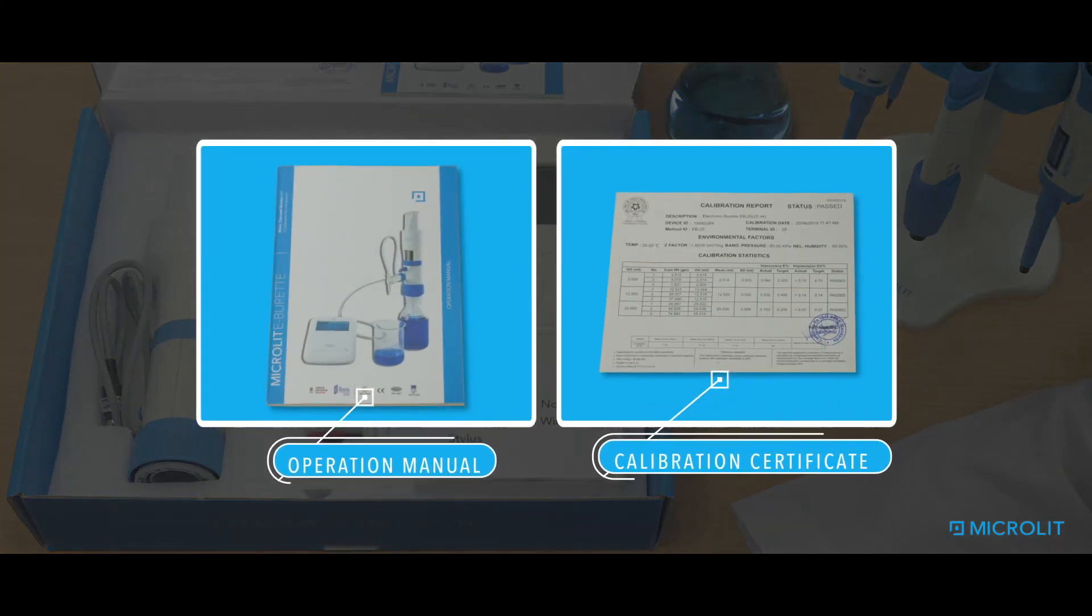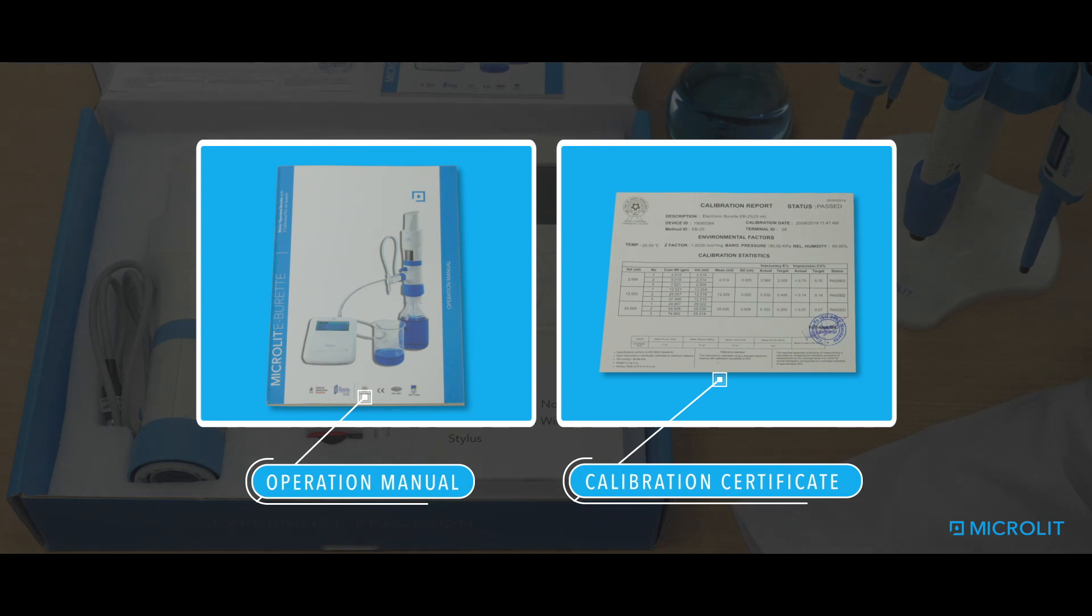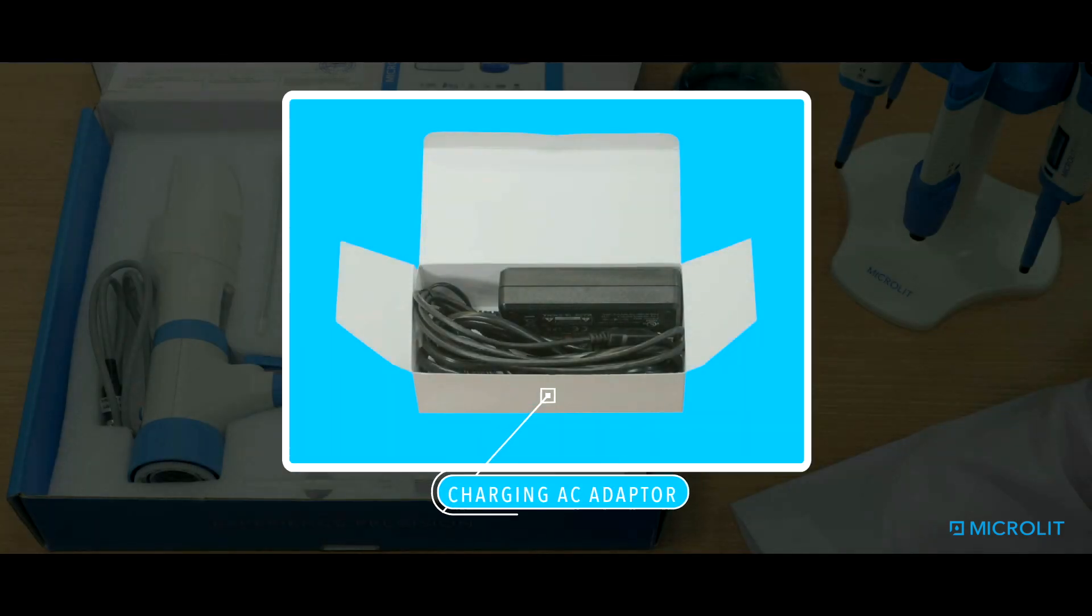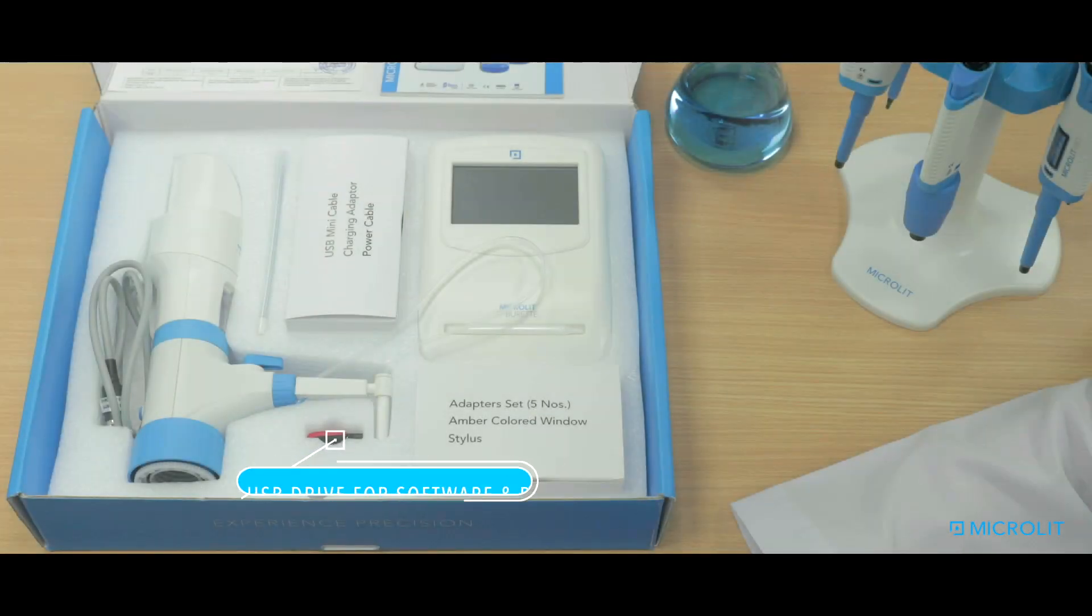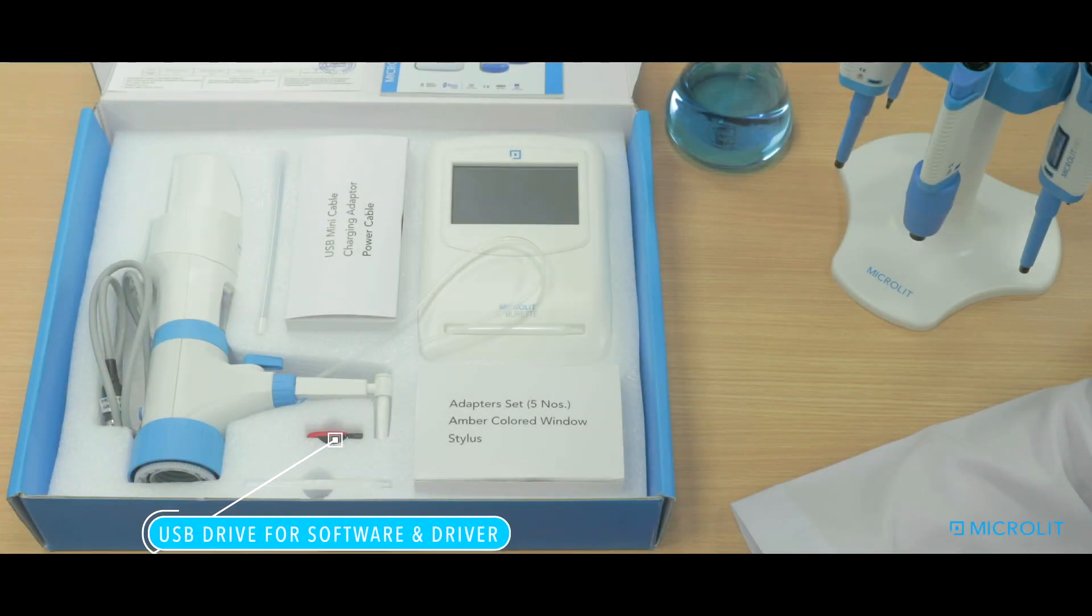In addition, the box contains a user manual and calibration report, an adapter and cable for charging the control panel, and a USB cable and software on a pen drive to enable computer connectivity.